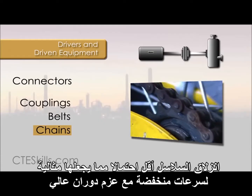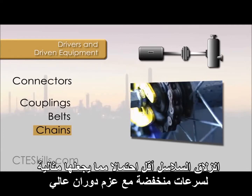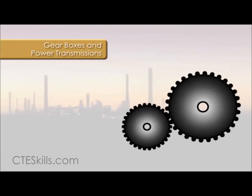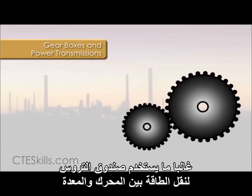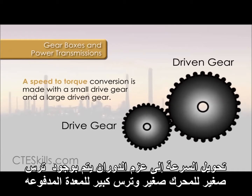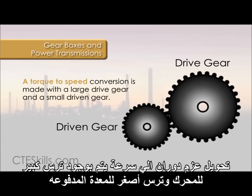With chains, slippage is less likely, which makes them ideal for low speeds and high torque. A gearbox is often used to transmit power between the driver and the driven equipment. A speed to torque conversion is made with a small drive gear and a large driven gear. A torque to speed exchange would be done with a large drive gear and a smaller driven gear.